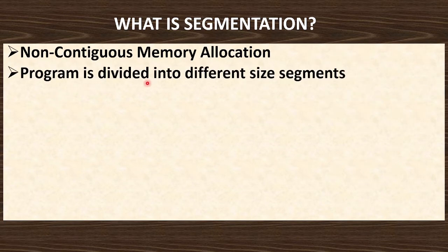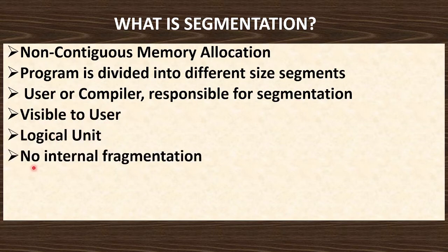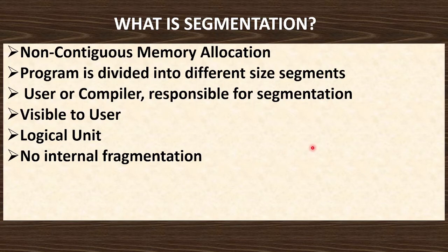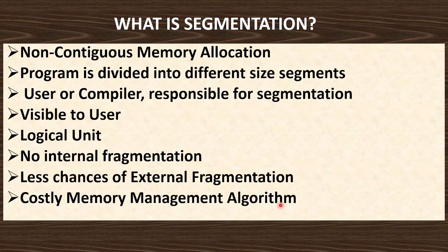The program is divided into different size segments, and the user or compiler is responsible for segmentation. It is visible to the user and it is a logical unit. No internal fragmentation occurs when you do segmentation. The purpose of segmentation is to get rid of fragmentation so that no memory wastage will be done — memory should be utilized properly. There is a less chance of external fragmentation; it might occur but chances are very less. However, it is a costly memory management algorithm.